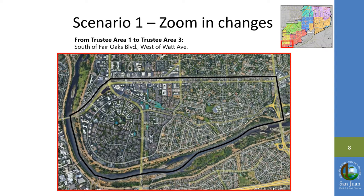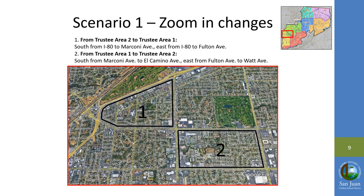Here you will see the area shifted from Area 1 to Area 3. This includes the area south of Fair Oaks Boulevard to the district's southern boundary and the area west of Wall Avenue to the district's western boundary. Here you see the area shifted from Area 2 to Area 1 and vice versa. The first change includes the area south of I-80 to Marconi Avenue and east from I-80 to Fulton Avenue. The second change includes the area south of Marconi Avenue to El Camino Avenue and east from Fulton Avenue to Wall Avenue.